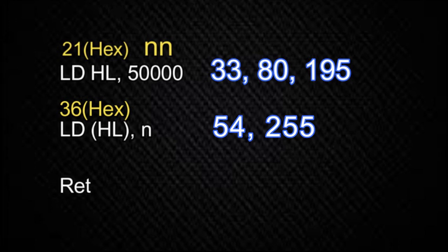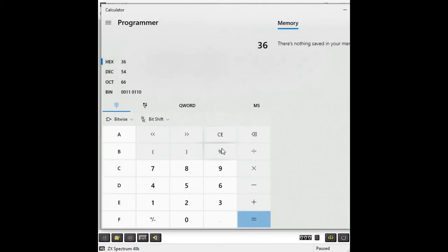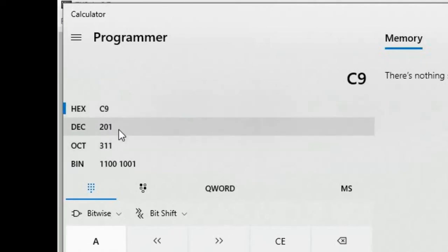We only have one command left to convert — the return command, which we looked at in a previous video. You can look it up in a book or online: the value of the return command is C9 in hexadecimal. Clearing the calculator and entering C9, the equivalent decimal value is 201. That would be the final byte of our machine code program.